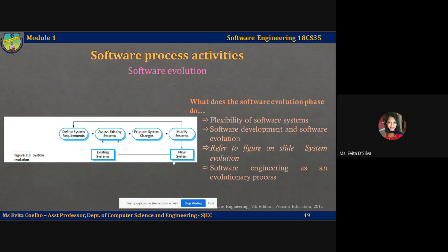The new system is again added to this database of existing systems because it may be reused when you have further problem statements. Note that once you modify the system and a new system is created, this evolution does not end there. You can always go back to phase one of defining system requirements and add more functionality or modify your system. In this way, most software systems today are not developed from scratch — rather, reuse of existing software modules, code, or units are made.